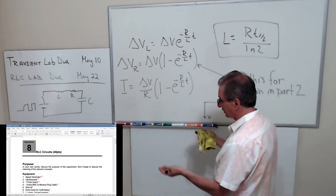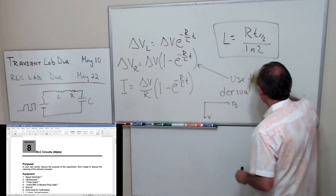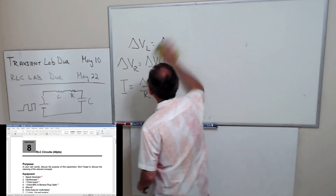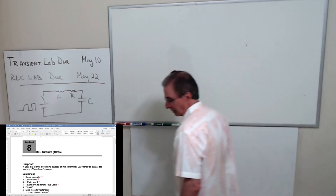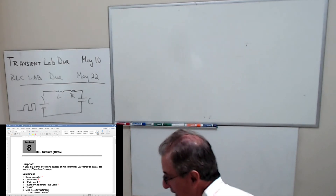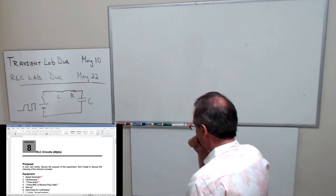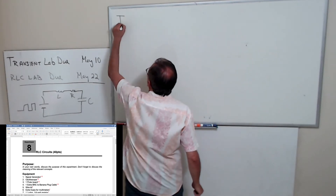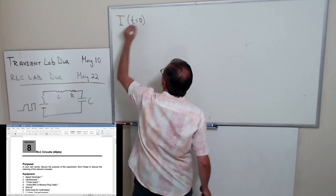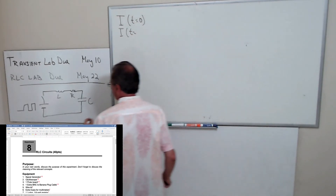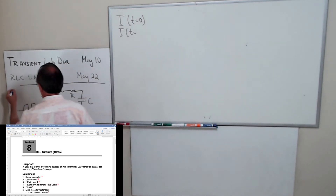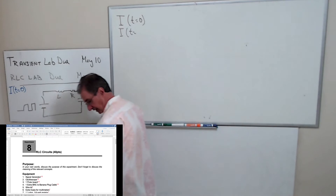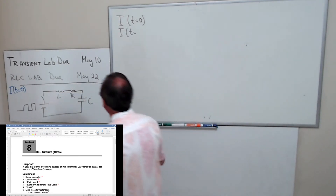You close the switch and the circuit will respond. If I close the switch, what can we say about the current at t equals zero and the current at t equals infinity? I'm going to need a lot of space, so let me set this up. When you flip the switch and start the system, the inductor is not going to want to change, so initially the current is going to be zero.